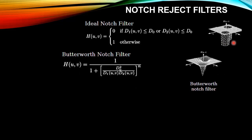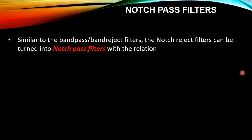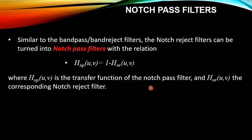We also have a Butterworth notch filter, and you can see the difference in the shape of the transition — in the ideal case the transition is abrupt from 0 to 1, whereas here it is a smooth transition from low to high. Similarly, the Gaussian notch filter has a smooth transition given by its equation. It rejects frequencies in a particular neighborhood and allows all other frequencies to pass. Similar to the band reject filters, the notch reject filter can be turned into a notch pass filter using the relation: H_NP(u,v) = 1 − H_NR(u,v), where H_NP is the transfer function of the notch pass filter and H_NR(u,v) is the corresponding notch reject filter.